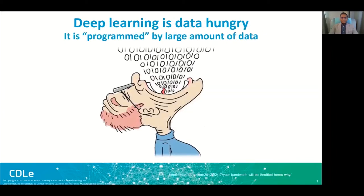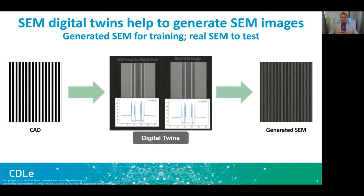Deep learning requires a huge amount of data with all varieties so that it can learn a meaningful model. We built a SEM-based toolset, which means the huge amount of data has to be SEM images. Mask shops do an incredible job to avoid errors in printing, so it is extremely hard to get SEM images. For that, we built a digital twin to generate millions of SEM images.